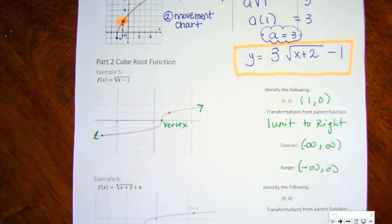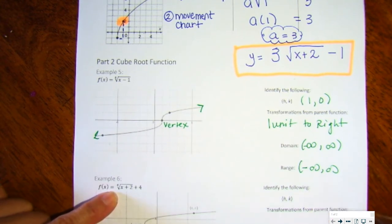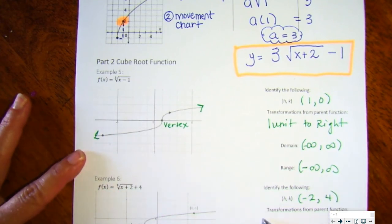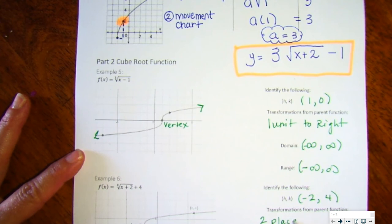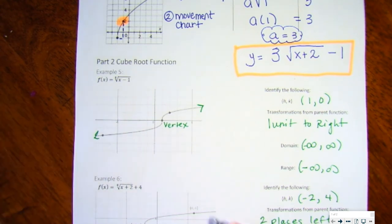When we take a look at this one right here, we're going to go ahead and identify the h, k: the vertex, which is a negative two and a positive four. And notice for here, this is going to be two places to the left of the origin, and it is going to be four places up from the origin.